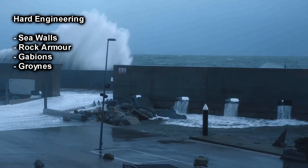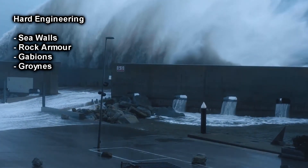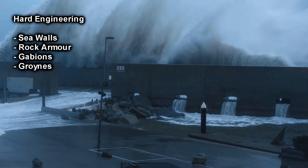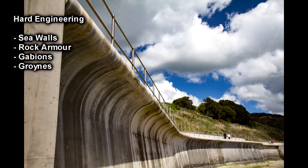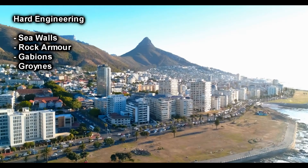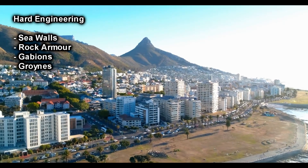Here are the four main types of hard engineering strategies you need to be aware of. Starting with sea walls — they provide a hard barrier against the sea, which is really important to protect areas such as towns. They're fairly expensive but they provide a long-lasting barrier against the sea.